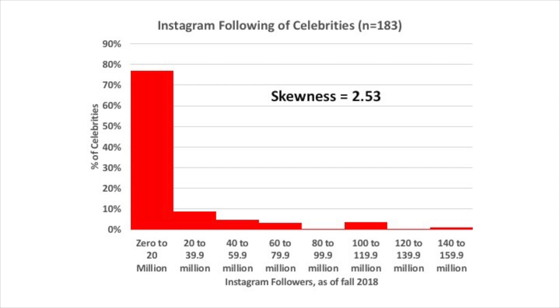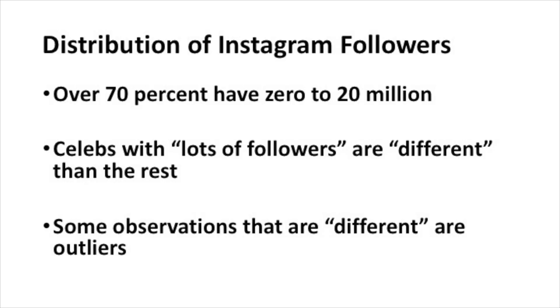In the distribution of the Instagram following of celebrities, over 70% of the celebrities have between 0 and 20 million followers, and there were smaller percentages of celebrities in the right tail of the distribution that have lots of followers. We could say those celebrities are different than the rest of the distribution. Again, 70% of the celebs have between 0 and 20 million, so if you're somebody that has 100 or 125 million followers, you're different than the rest.